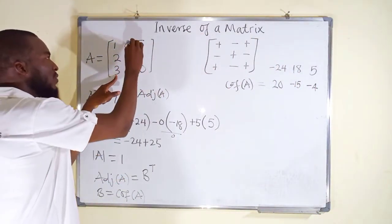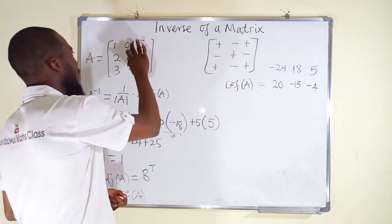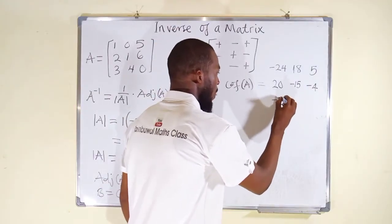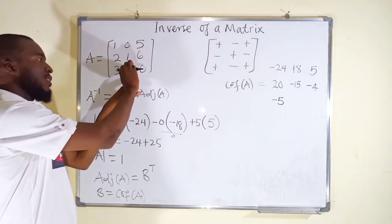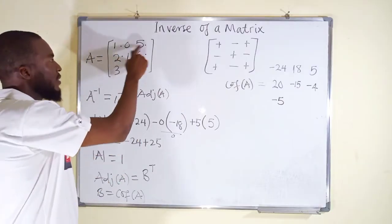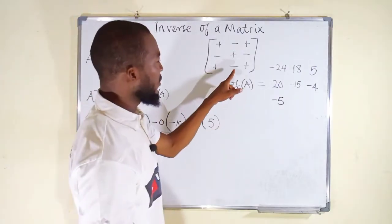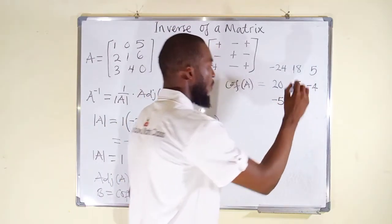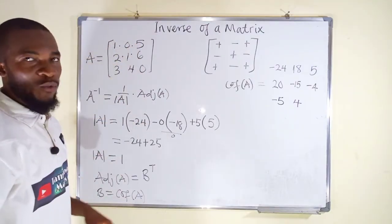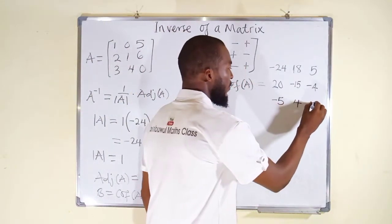For the third row, first entry: closing its row and column, we get 0 times 6 is 0, minus 1 times 5 is 5. 0 minus 5 is minus 5. The sign is positive, so it remains minus 5. Second entry: 1 times 6 is 6, minus 2 times 5 is 10. 6 minus 10 is minus 4. The sign is negative, so it becomes positive 4. Last entry: 1 times 1 is 1, minus 2 times 0 is 0. 1 minus 0 is 1. The sign is positive, so we have 1.